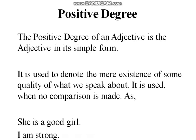Now let's come to the degrees of adjectives. The word 'degree' means a level, a quantity, a point, an extent. The first one is positive degree. The positive degree of an adjective is the adjective in its simple form. It tells us the quality of something and is used to denote the mere existence of some quality of what we speak about.